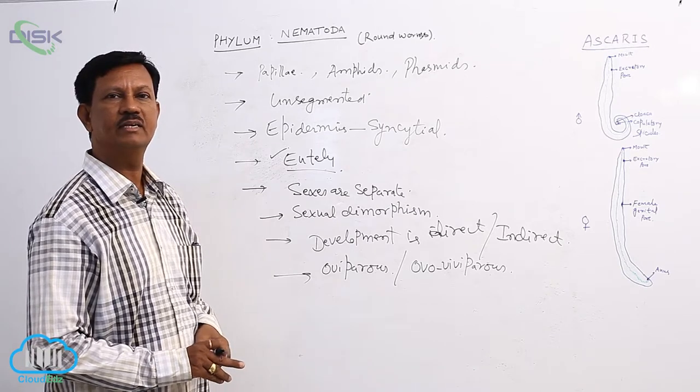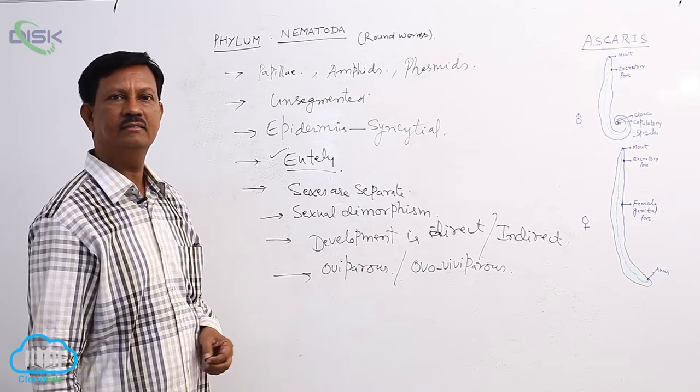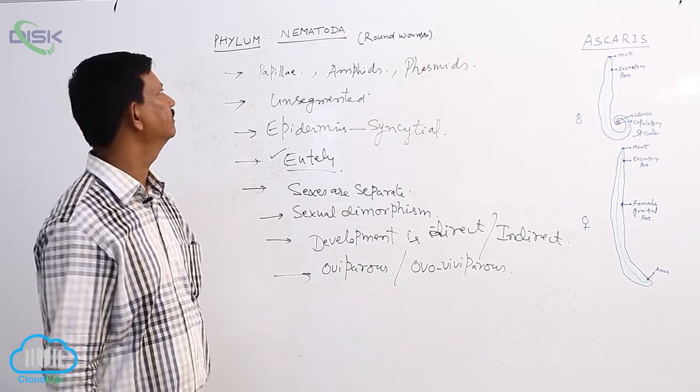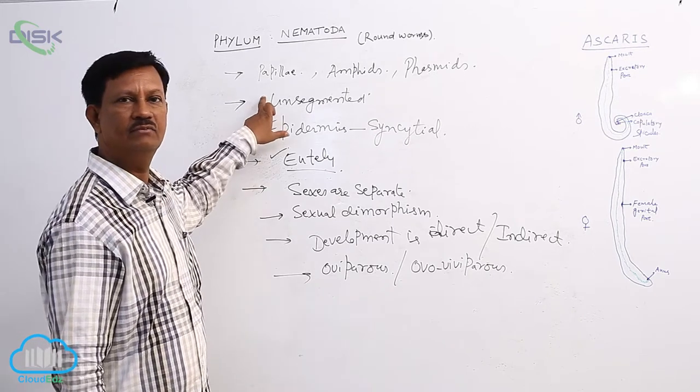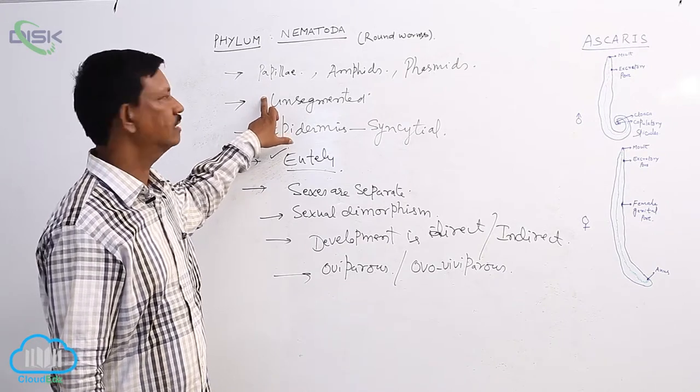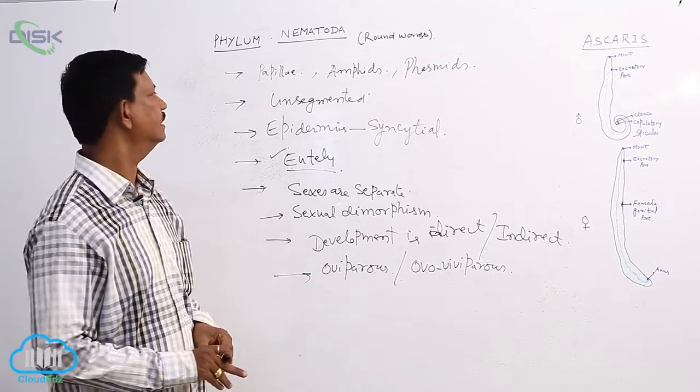And nervous system contains the nerve ring and nerves. Sensory organs are also present which are known as papillae, amphids, and phasmids. Body is unsegmented.